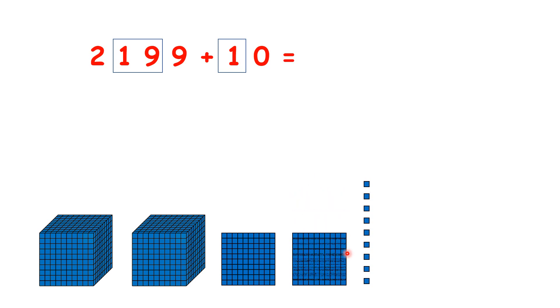So our answer is 2,209 because we don't have any tens, but we do have two hundreds. And two hundreds is the same as 20 tens.